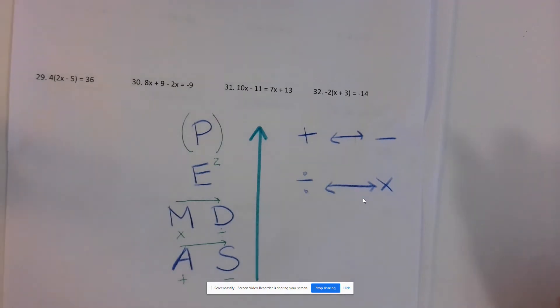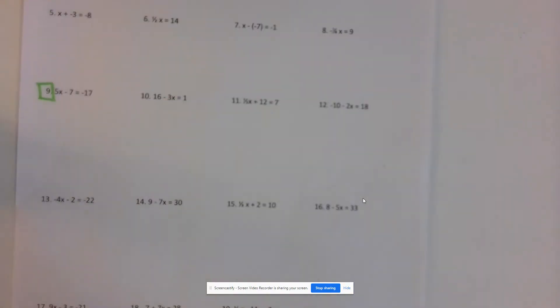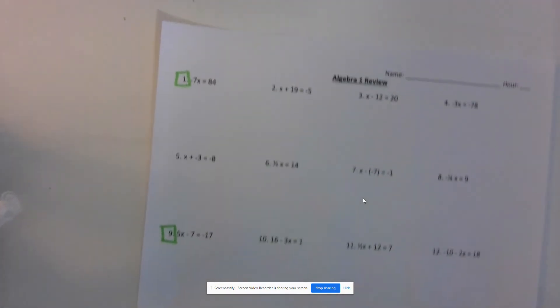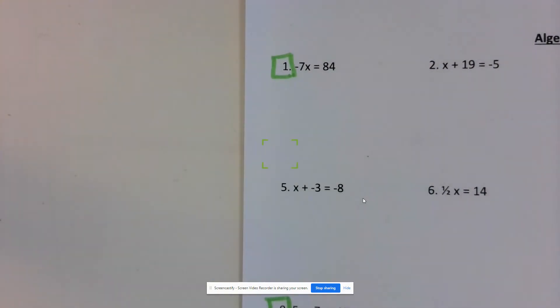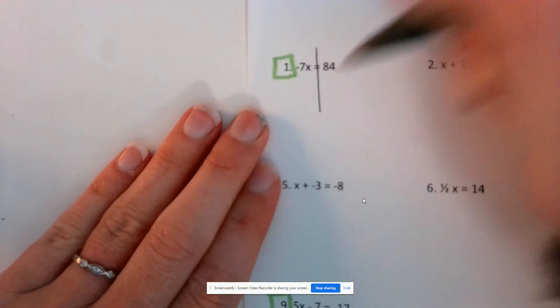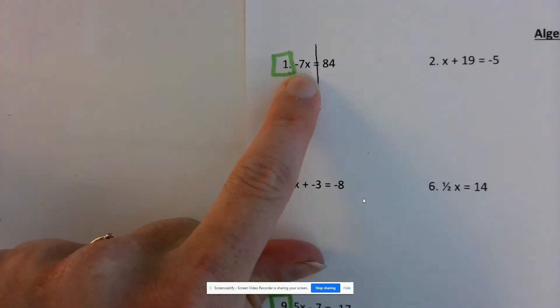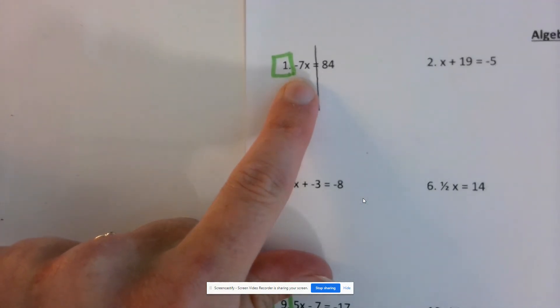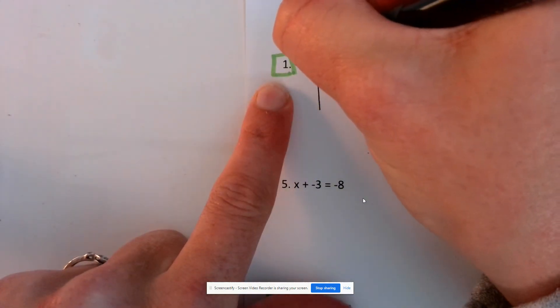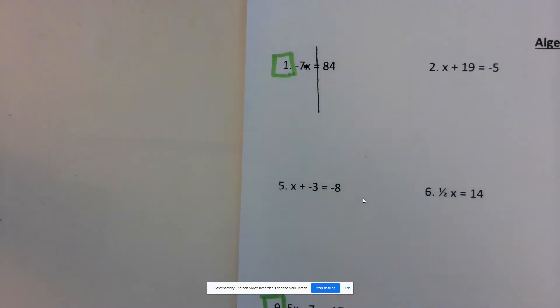Number one, we're solving the equation negative 7x equals 84. I draw a line down my equal sign to help me keep both sides of my equations nice and neat. I want to get x alone, so I need to get rid of this negative 7 that's out front. This negative 7x means negative 7 times x, so I want to undo multiplication. The inverse operation of multiplication is division.